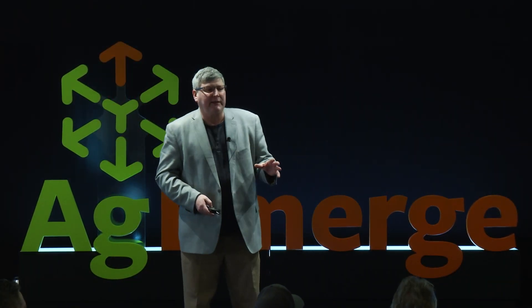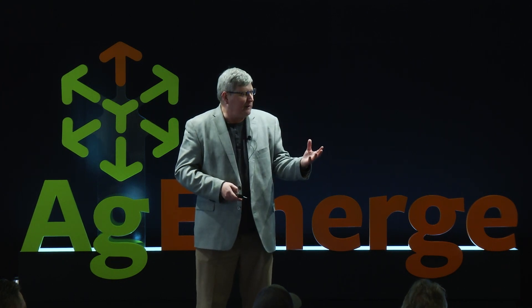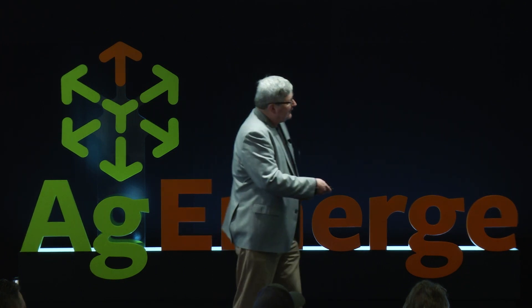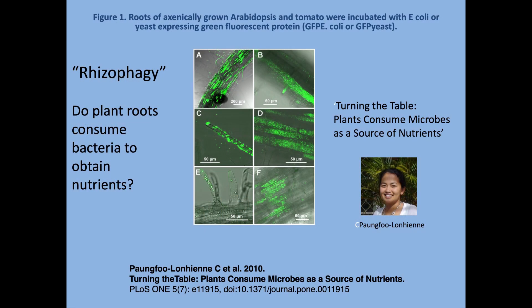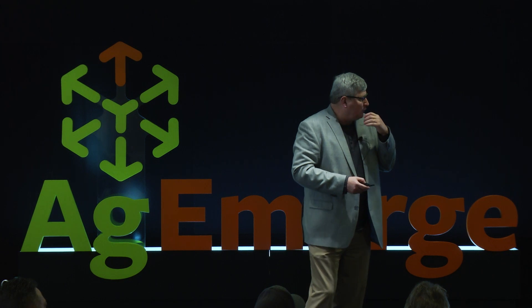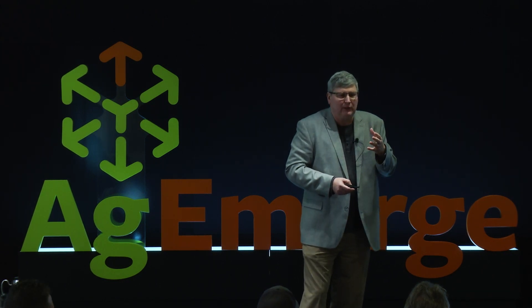In 2010, some investigators in Australia discovered that microbes — yeasts and bacteria — were entering into plant roots. They labeled the microbes with green fluorescent protein so they could track them inside the plant. They showed that these microbes went inside the plant cells, and they envisioned this as a root-eating process — that the roots were actually consuming these microbes. So they denominated this rhizophagy: rhizo for root, phagy for eating. They published an article titled 'Turning the Table: Plants Consume Microbes as a Source of Nutrients.' We've been examining that phenomenon for several years now.